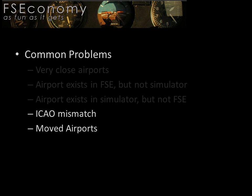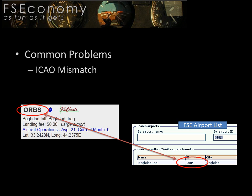Another common problem with more recently released simulators is that ICAOs have been updated to reflect real-life changes. Nine times out of ten, the airport is in the exact same geographical location in your simulator as in the FSE world. However, when you finish your online FSE flight planning and job gathering, and then attempt to go to that airport where you rented your plane, your simulator throws you a curveball by telling you that no such airport exists. There is only a problem if you're not aware of the ICAO differences, since FSE will log you correctly — simply operate from the airport in your simulator as normal.